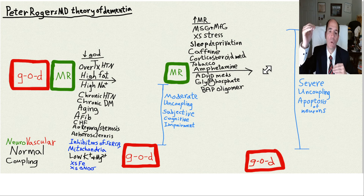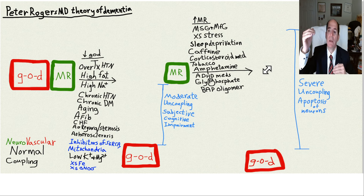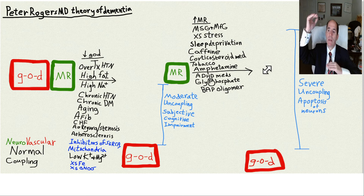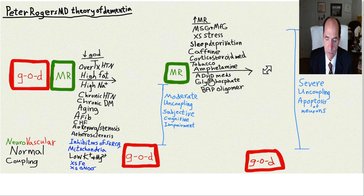You can also worsen it with mitochondrial inhibitors, circuit inhibitors, and volatile organic chemicals. A high-fat diet leading to increased beta-amyloid protein worsens things further. When the gap gets too wide between the neuron's metabolic rate and the ability to deliver oxygen, glucose, and ATP from mitochondria, the neuron just dies — that's how people lose large numbers of neurons and become demented over decades.